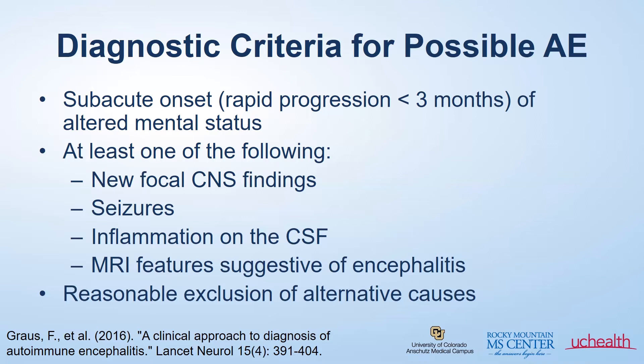Seizures are again very common. Diagnostic tests that would help define the syndrome include inflammation on the spinal fluid and MRI brain. To meet the criteria, you also need to have reasonable exclusion of alternative causes, meaning we need to rule out other things that can mimic autoimmune encephalitis, such as infectious causes — a common one being HSV or herpes simplex virus encephalitis.